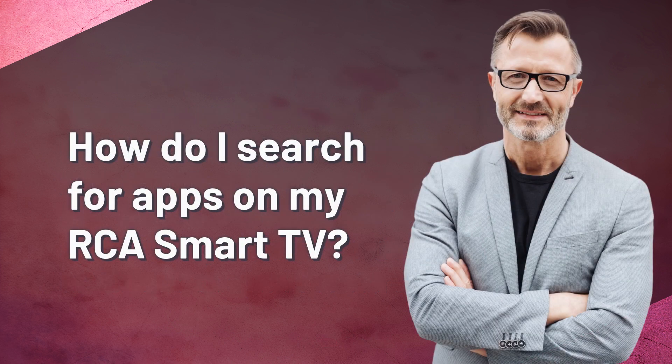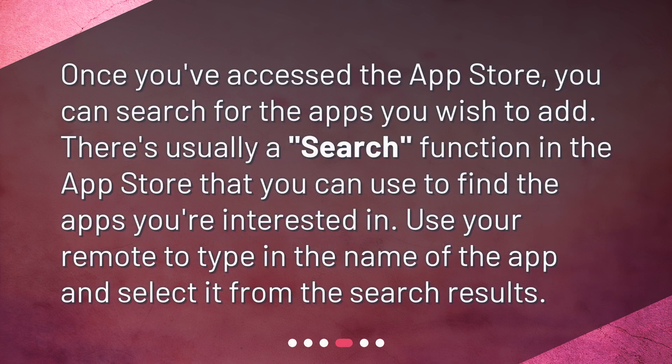How do I search for apps on my RCA Smart TV? Once you've accessed the App Store, you can search for the apps you wish to add. There's usually a search function in the App Store that you can use to find the apps you're interested in. Use your remote to type in the name of the app and select it from the search results.